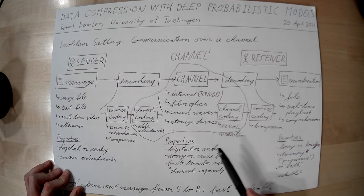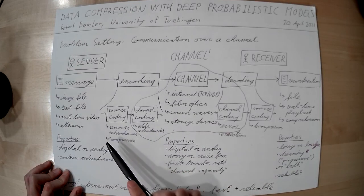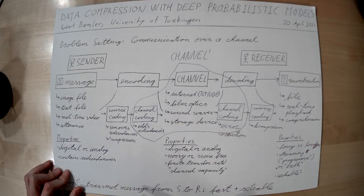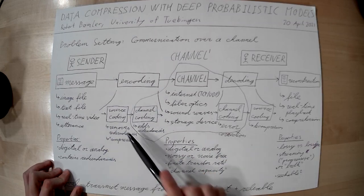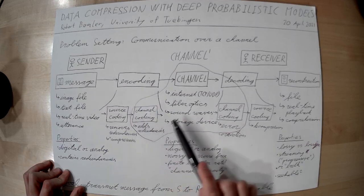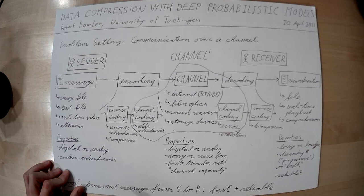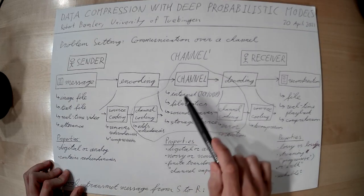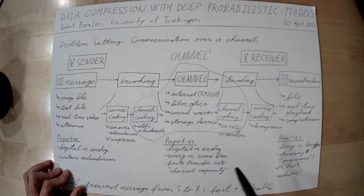We then saw that we can in general separate, at least in principle, the removal and the addition of redundancies. This is called source coding and channel coding. Because we can separate the two, and because channel coding only needs to care about properties of the channel and not properties of the message, we can build an abstraction of a noise-free channel that contains a physical channel combined with some error correction tools.